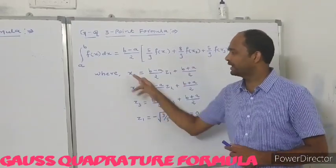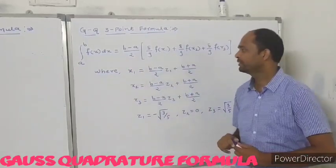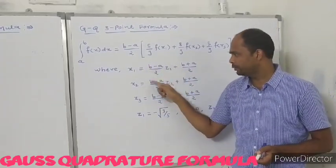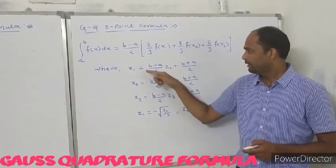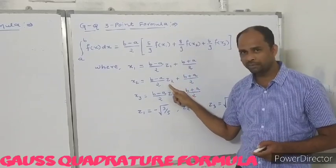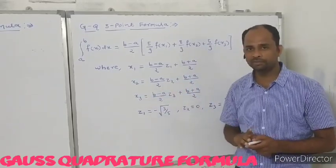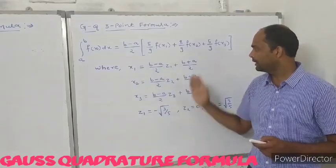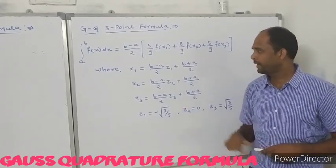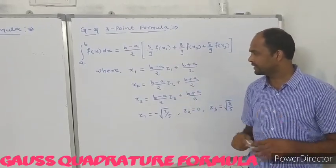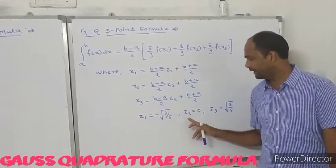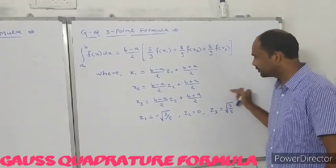The values of x1, x2, and x3 are defined such that the first term (b minus a) upon 2 is the same for all three, but multiplied by z1, z2, and z3 respectively. The value of z1 is minus root 3 by 5, the value of z2 is 0, and the value of z3 is root 3 by 5.